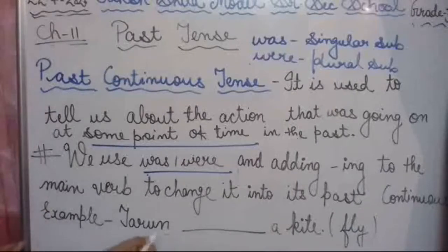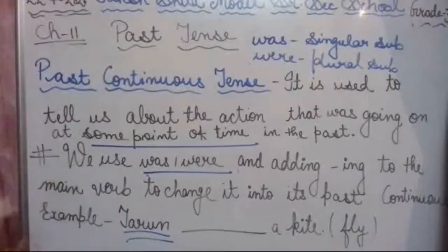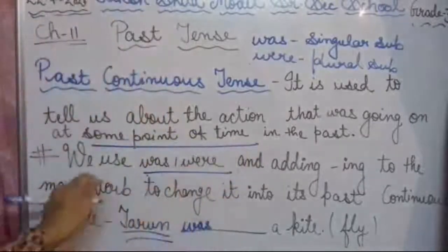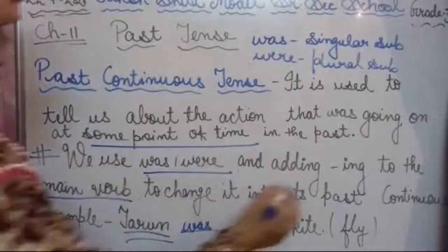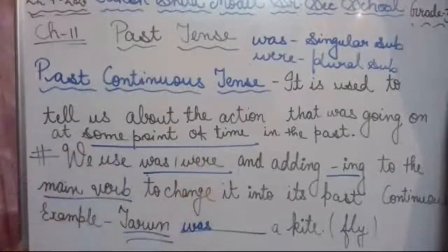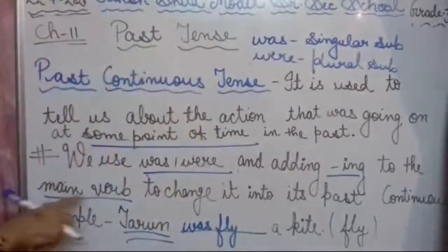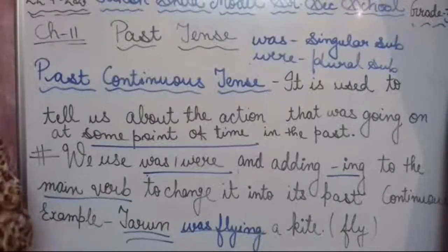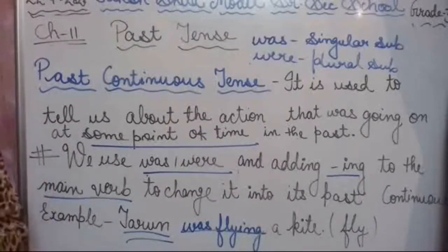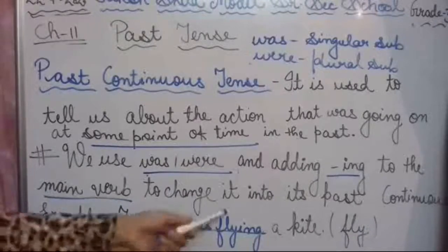For example: 'Tarun ___ a kite.' Tarun is one name — singular — so we use 'was.' Then we add ING to the main verb 'fly,' giving us 'flying.' So the sentence is: 'Tarun was flying a kite.' It means the action of flying a kite was going on in the past.